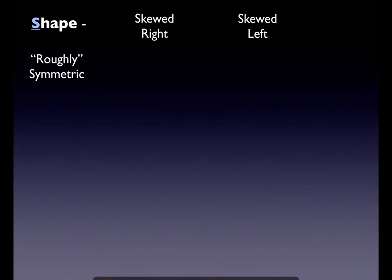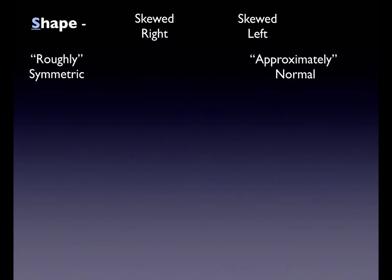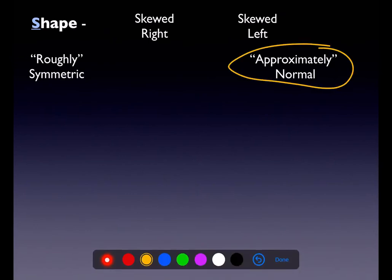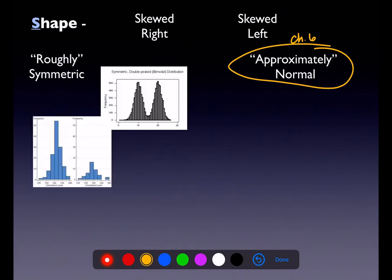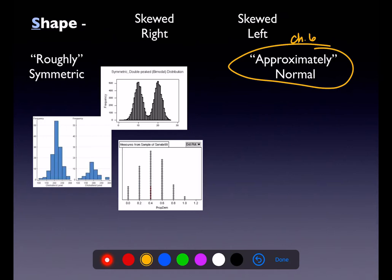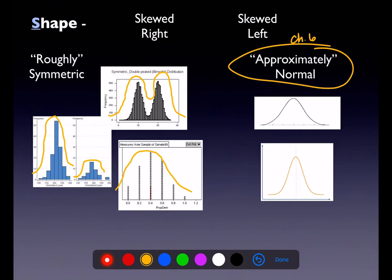The last thing to talk about is shape. The most common shape adjectives are skewed right, skewed left, or roughly symmetric. We'll add 'approximately normal' in chapter six when we discuss z-scores. Roughly symmetric distributions include bimodal graphs and bell curves — approximately normal distributions are coming in chapter six.